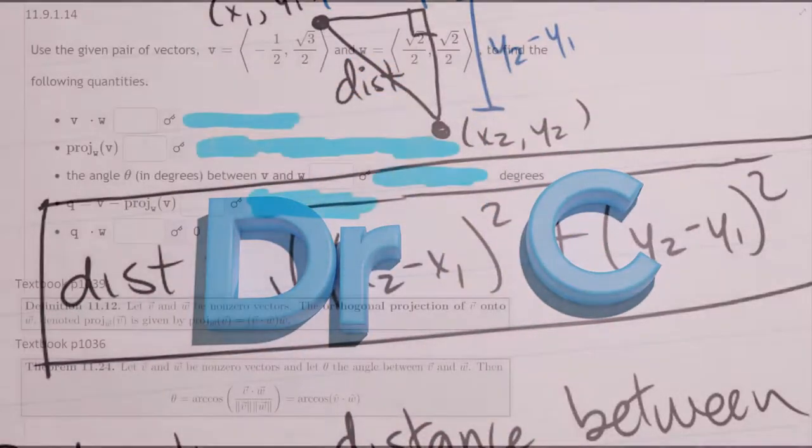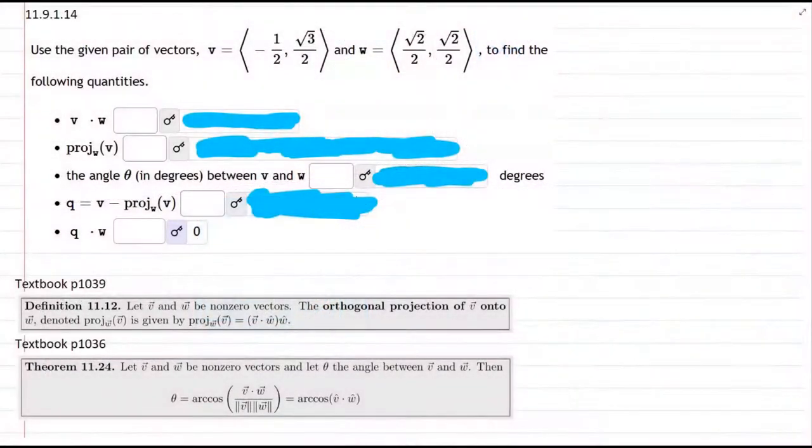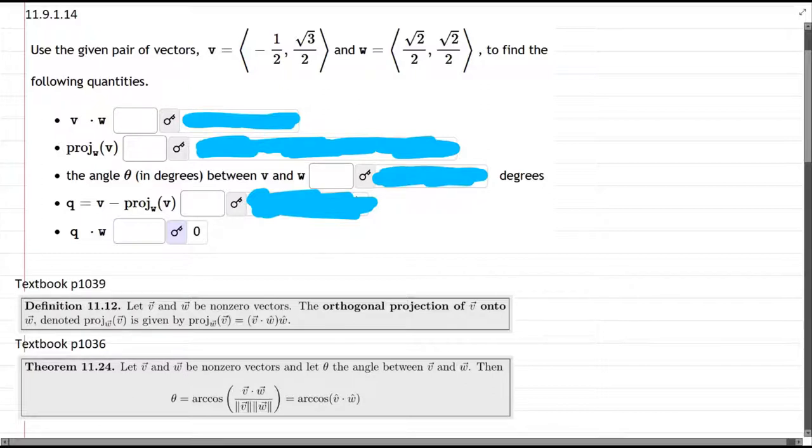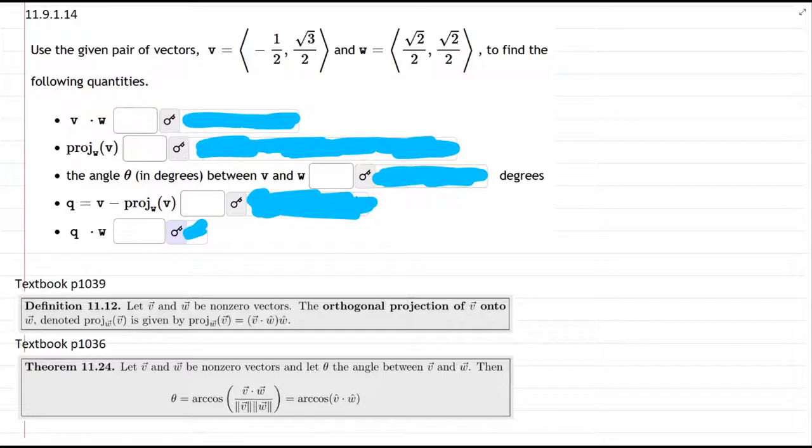So we're starting with two vectors, and we're going to compute the dot product, projection, angle between, and then a few more. This is the orthogonal projection, or the complementary projection, and then the dot product down here of the new q·w. I didn't cover that answer up. Better do that now. So let's go ahead and do this.